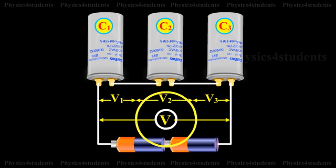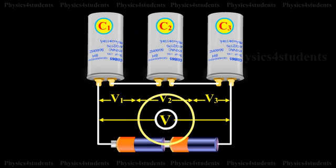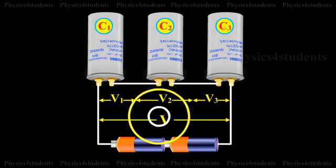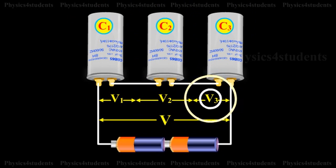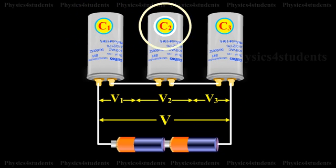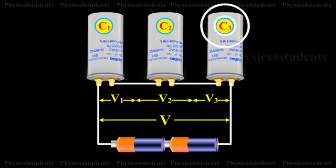Let V be the potential difference applied across the series of combinations. Each capacitor carries the same amount of charge Q. Let V1, V2 and V3 be the potential difference across the capacitors C1, C2 and C3 respectively.